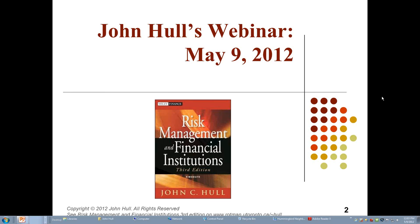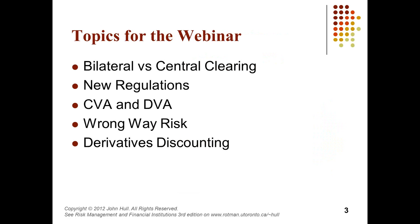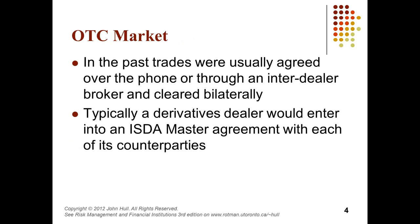If you want more information about the book, you can go to my website or to the Wiley website. The topics I'm planning to talk about today are: first, bilateral versus central clearing, which is an important change taking place in over-the-counter markets; some of the new regulations; CVA and DVA; and if we get time, two areas I've done research on recently — wrong-way risk and the discounting of derivatives.